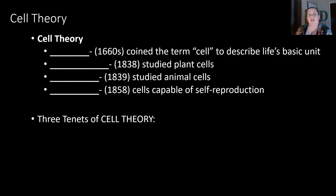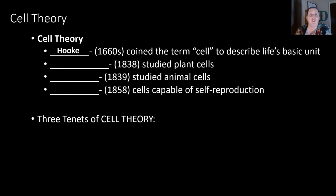Now let's talk about the cell theory. This was really developed because of the development of the microscope — when we were able to start to see that structures like ourselves, plants, or other organisms were made out of smaller things that they ended up calling cells. The first scientist who contributed to the cell theory was Robert Hooke. In the 1660s, he coined the term 'cell' to describe life's basic unit. He observed cork cells underneath the microscope and they looked like little rooms, kind of like what monks lived in, so he called them cells.